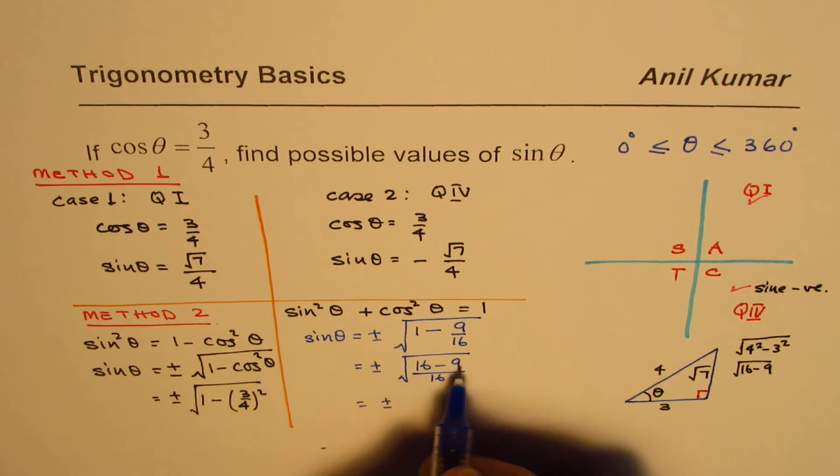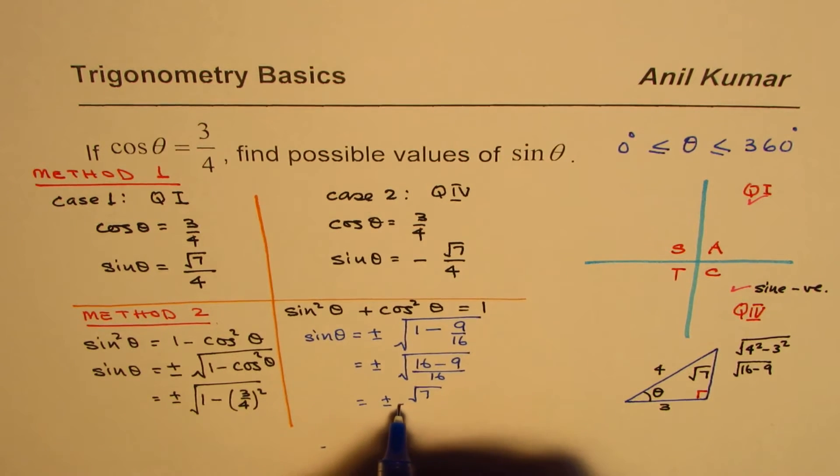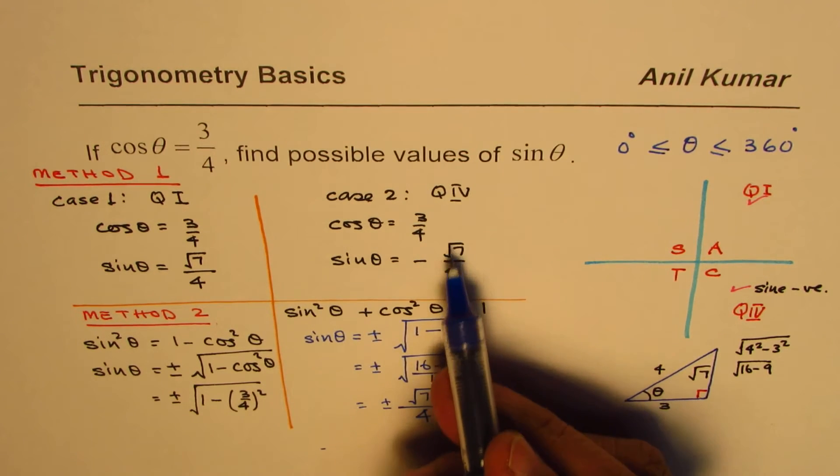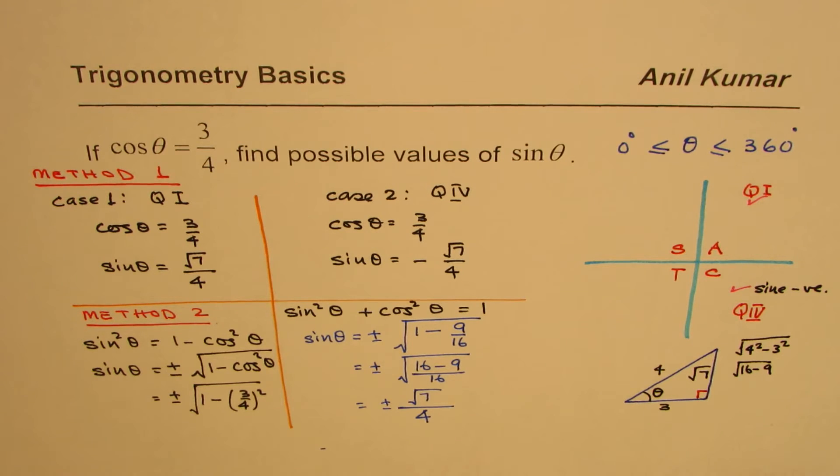Which is plus minus, the numerator is square root of 7, and the denominator is square root of 16, which is 4. So we get plus minus square root 7 over 4. Exactly the same answer which we got earlier.